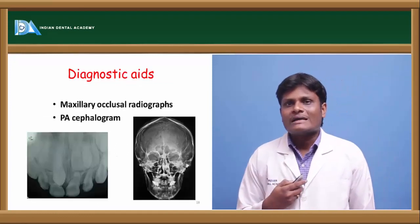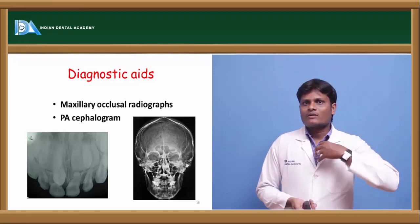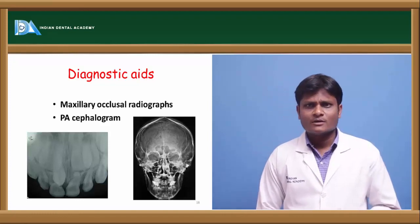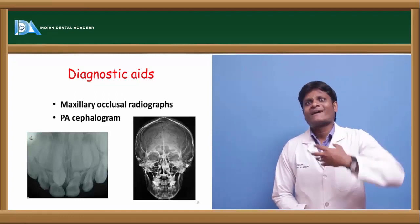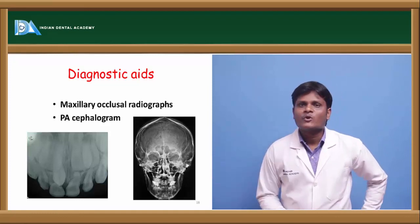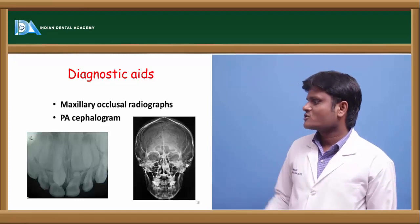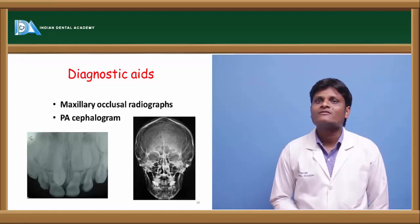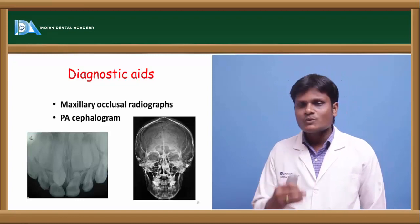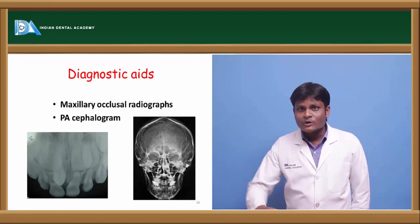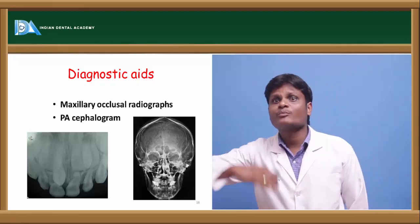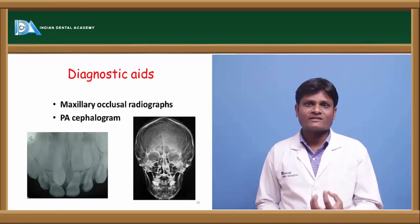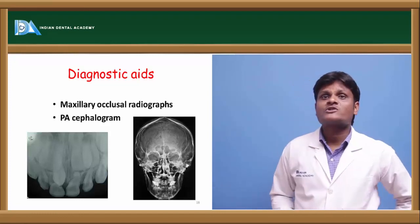Before instituting rapid maxillary expansion, treatment planning should include proper diagnostic aids. The main diagnostic aids are the posterior-anterior (PA) cephalogram and the occlusal radiograph. The PA cephalogram gives an estimate of the crossbite present, and the occlusal radiograph provides information regarding the ossification of the mid-palatal suture. These are used before treatment, during treatment, and post-treatment to evaluate the effects of rapid maxillary expansion.